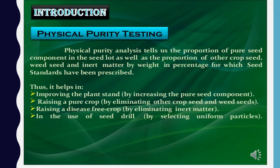Physical purity analysis tells us the proportion of the pure seed component in the seed lot, as well as the proportion of other crop seed, weed seed, and inert matter by weight in percentage, for which seed standards have been prescribed. The physical purity test helps in improving plant stand by increasing the pure seed component, raising a pure crop by eliminating other crop seeds and weed seeds, raising a disease-free crop by eliminating inert matter, and enabling use of a seed drill by selecting uniform particles.